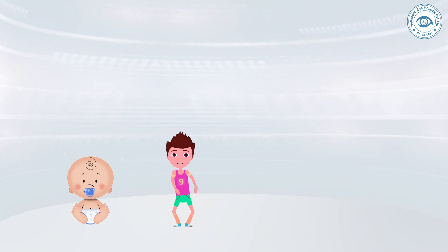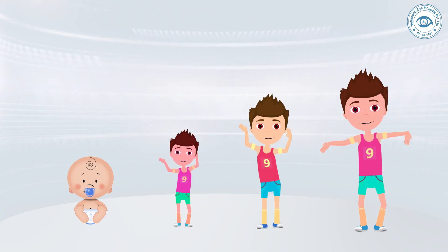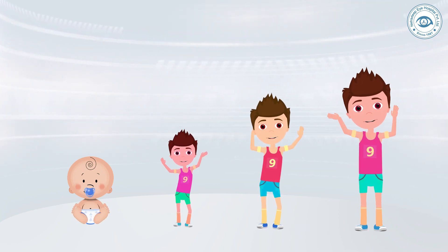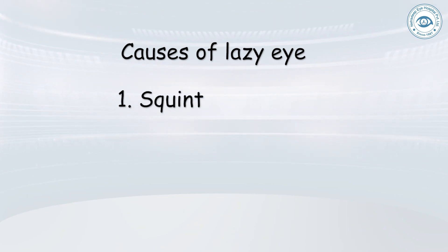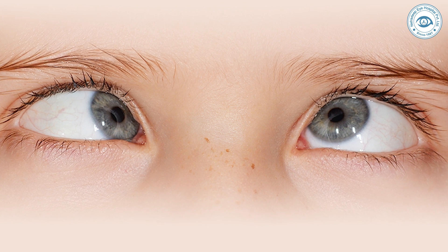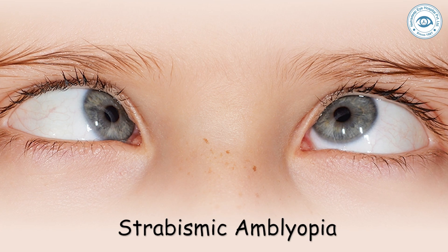What are the causes of lazy eye or amblyopia? A child's vision develops during the first 6 years of life, so anything that interferes or obstructs vision development during this period causes lazy eye. The most common cause is squint, where both eyes are not in the same direction. This is called strabismic amblyopia.